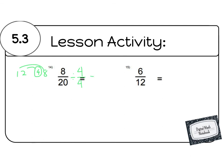8 divided by 4 gives me 2, and 20 divided by 4 is 5. So my simplest fraction is two-fifths.